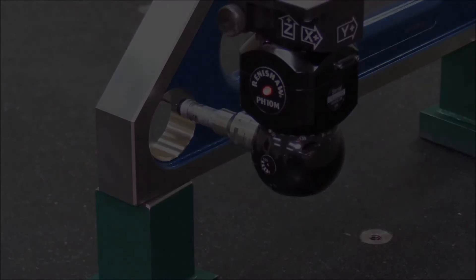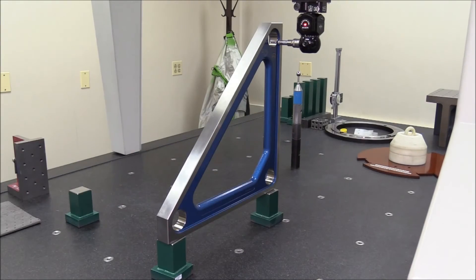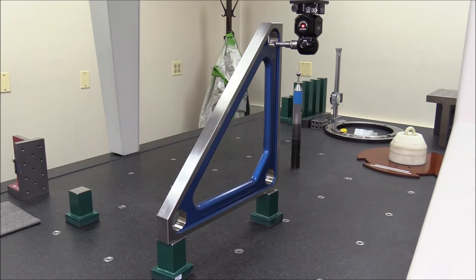Other volumetric devices, such as ball bars, require multiple setups and allow you to check only one linear path at a time.